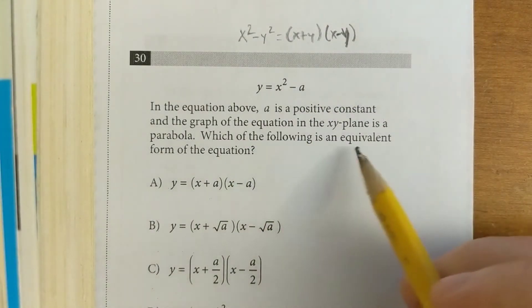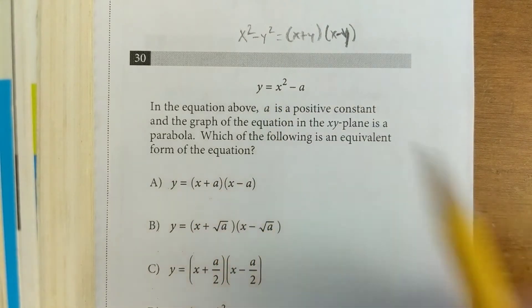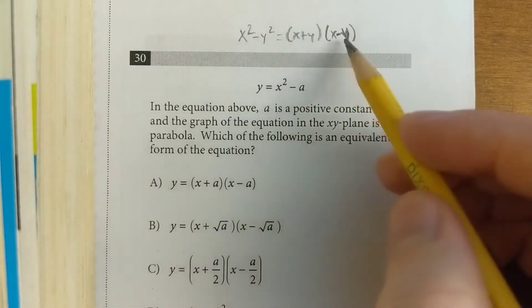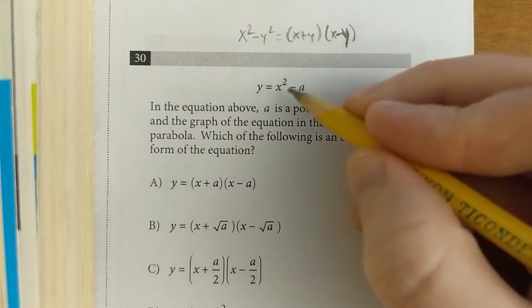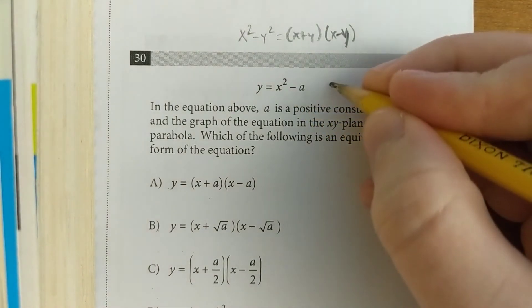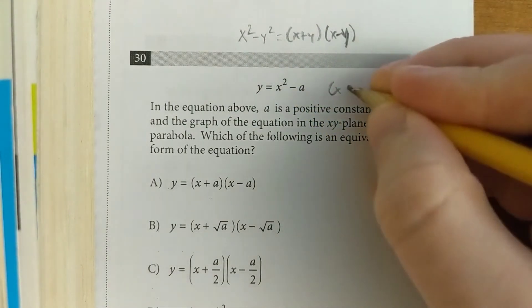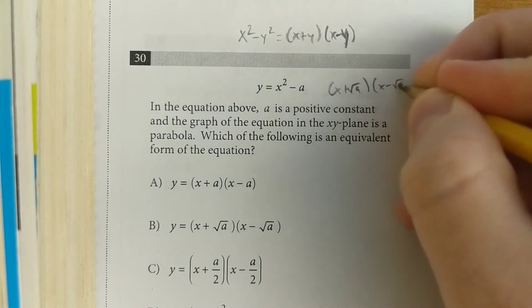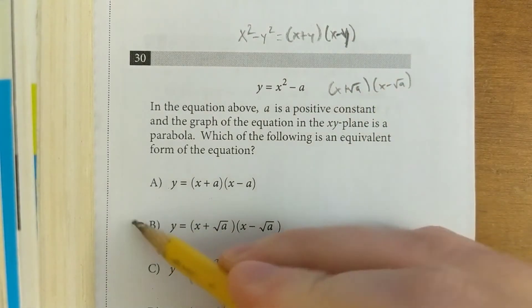This one asks which of the following is an equivalent form of the equation y = x² - a. Using the difference of two squares pattern, the square root of x squared is x, the square root of a is √a. So even though it looks a little different than the others, it still works.